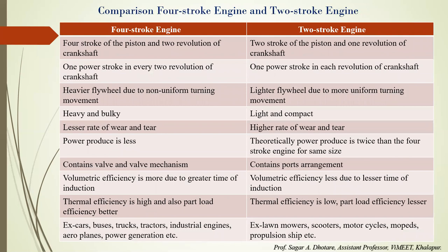Now the comparison between four-stroke and two-stroke IC engines. In a four-stroke engine, the piston completes two revolutions of the crankshaft per cycle. In a two-stroke engine, there is only one revolution of the crankshaft per cycle. In a four-stroke engine, one power stroke occurs every two revolutions of the crankshaft. In a two-stroke engine, one power stroke occurs with each revolution of the crankshaft.